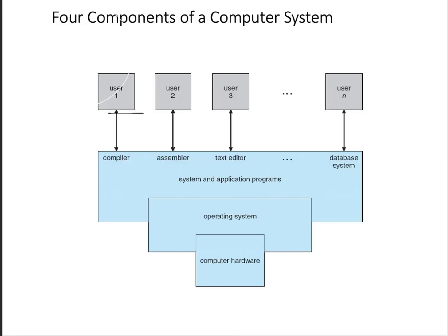When we talk about operating systems, we don't actually have a universal definition, but in this course we will adopt one definition: an operating system is a program that manages the computer hardware. It also provides a basis for application programs and acts as an intermediary between the computer user and the computer hardware.